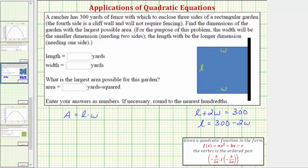From here, if l is equal to 300 minus 2w, we can substitute 300 minus 2w for l in our area equation.